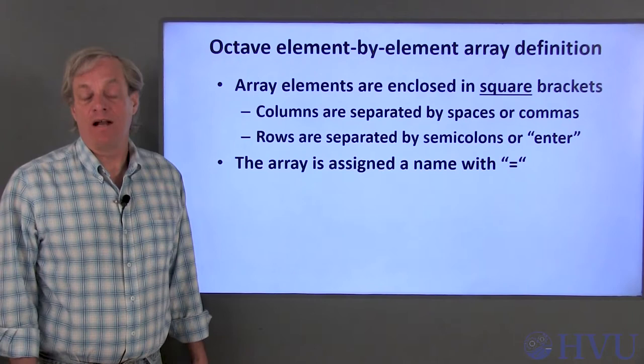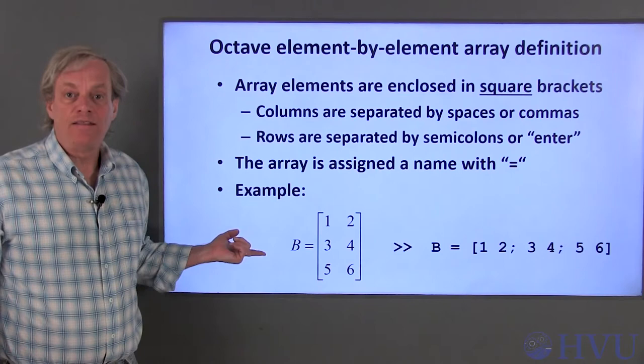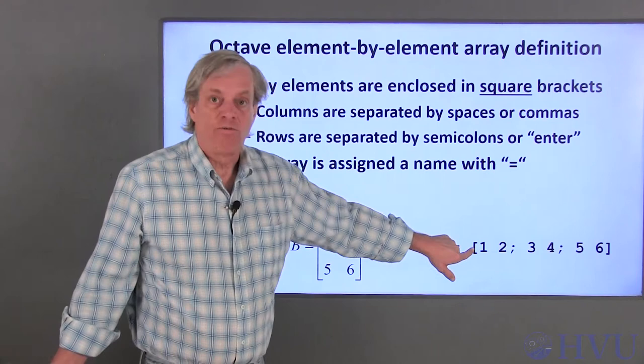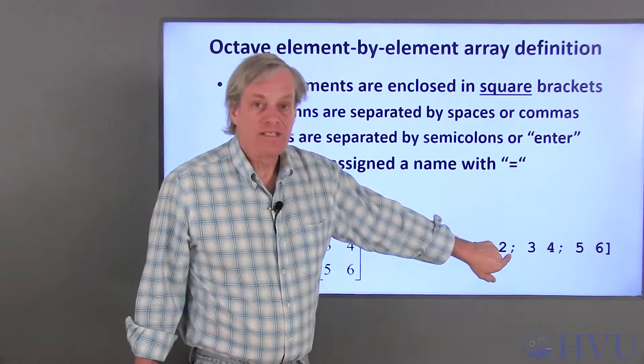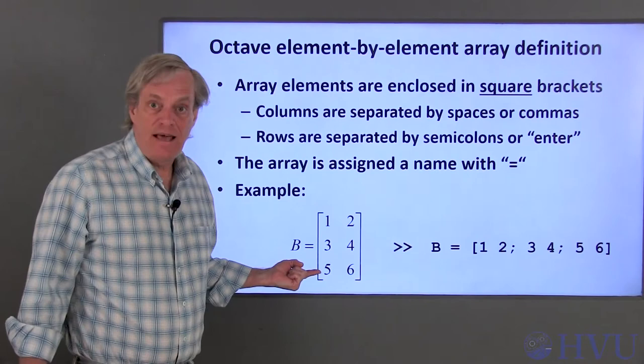For example, consider array B. To create this array, type the variable name B, an assignment operator, and then the values. An open square bracket tells Octave that an array is being created. Then type the elements in the first row, 1 and 2, separated by spaces or commas. To move to the second row, enter a semicolon. Then type the elements in the second row separated by spaces. Another semicolon takes you to the third row. To show that you are done creating the array, close the square brackets and press Enter.